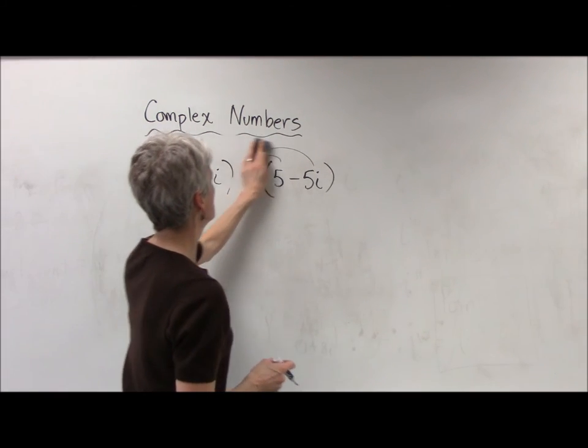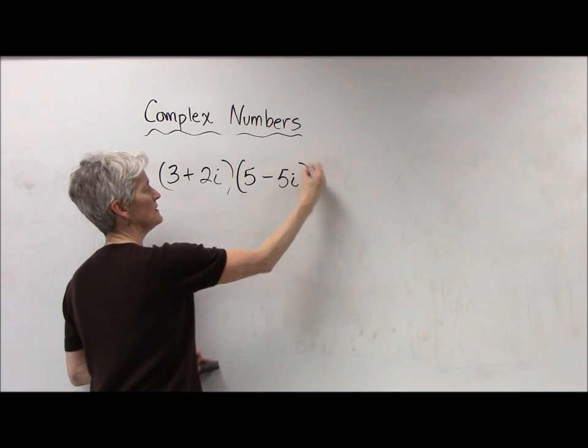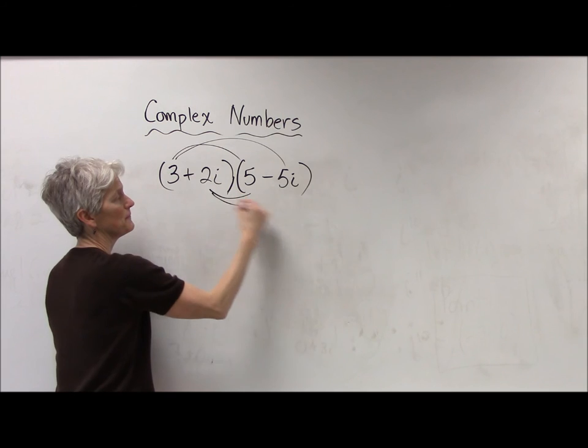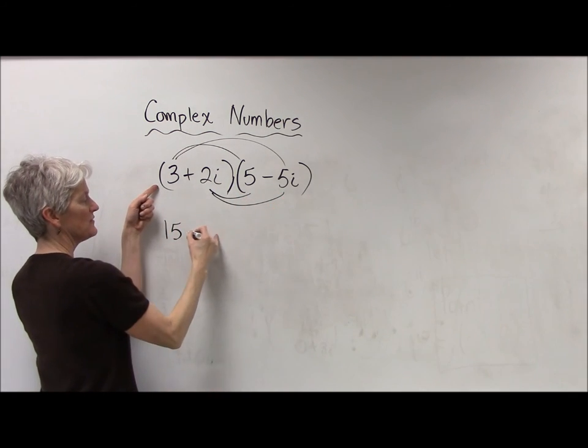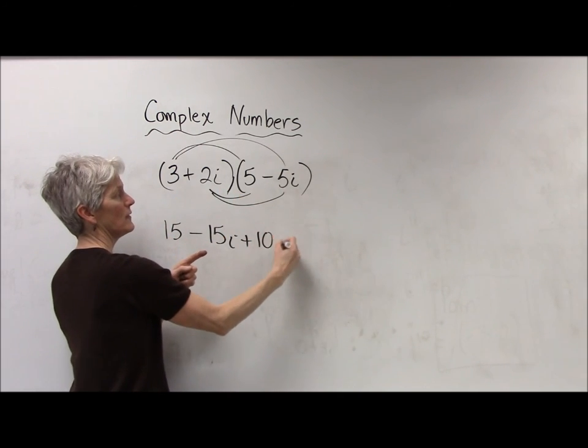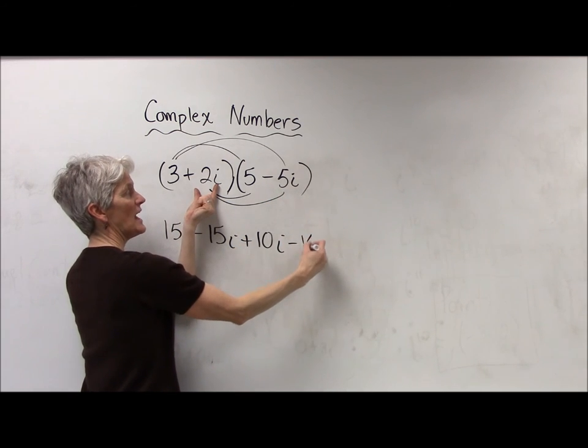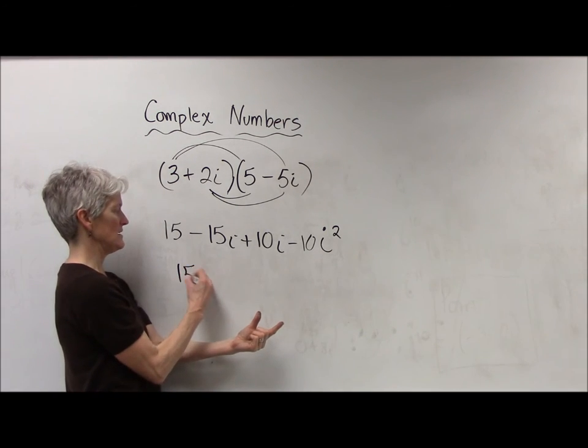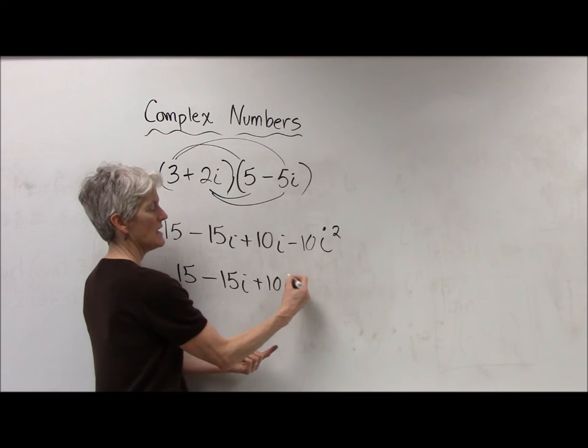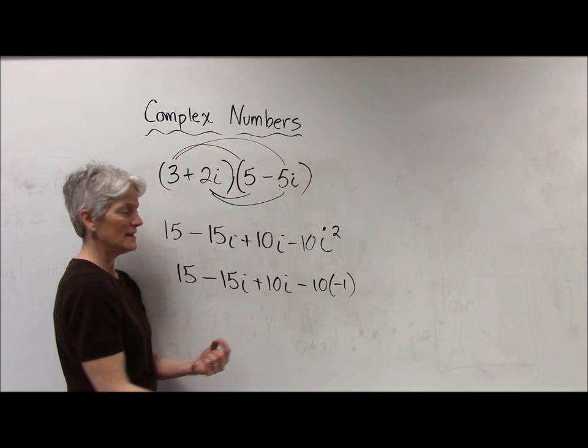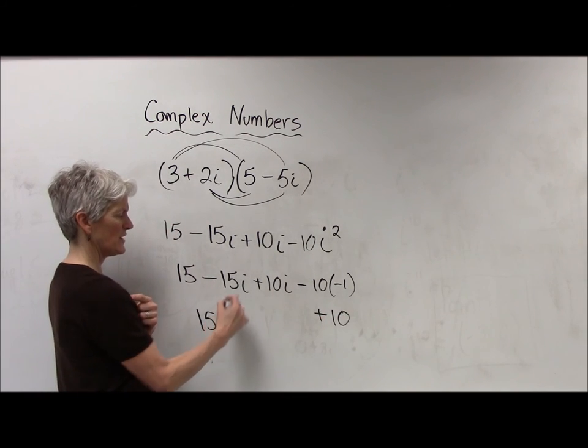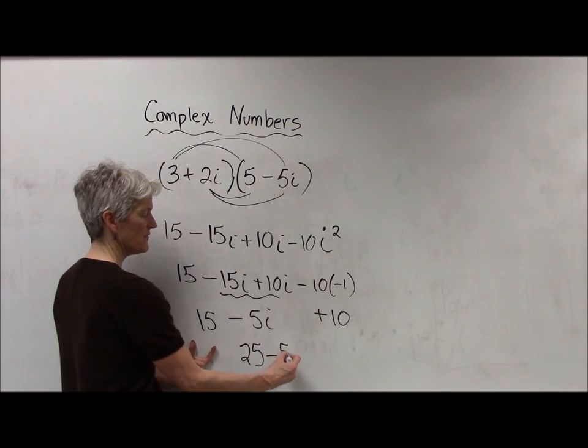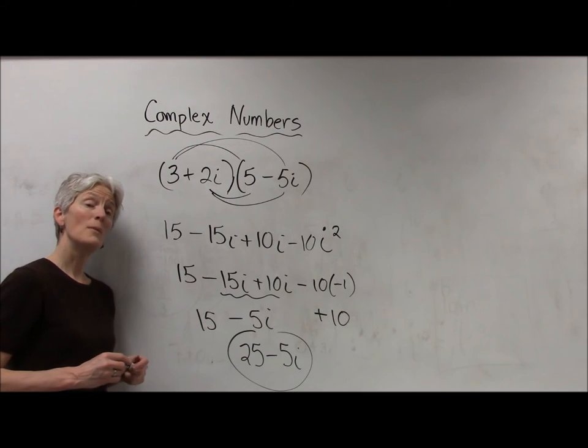Multiplying is a little trickier. I'm just sticking with my same ones, but again, it's just like multiplying together two binomials. I'm going to double distribute. 3 times 5, 3 times negative 5i, 2i times 5. Let's look at this. This is going to be negative 10i times i is i squared. Ooh, i squared. That's negative 1, isn't it? So I have negative 15i plus 10i minus 10 times negative 1. That's going to give me a plus 10. Why don't I go ahead and combine those together? And now that's going to give me a 25 minus 5i. So that's how we would multiply these.